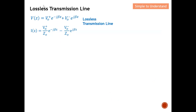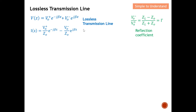Let's quickly revisit the lossless transmission line. Earlier I derived these two equations — one as a function of voltage and one as a function of current — which describe a lossless transmission line. I also derived the equation for the reflection coefficient. If you're not sure how I derived these equations, please take a look at the playlist; I'll put the derivation videos under the description.